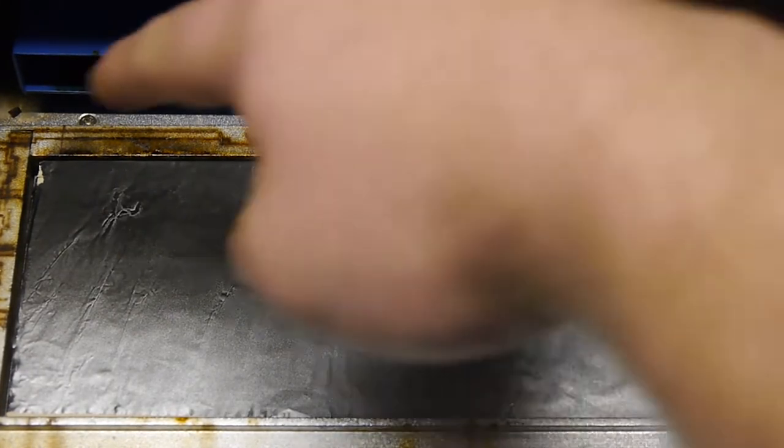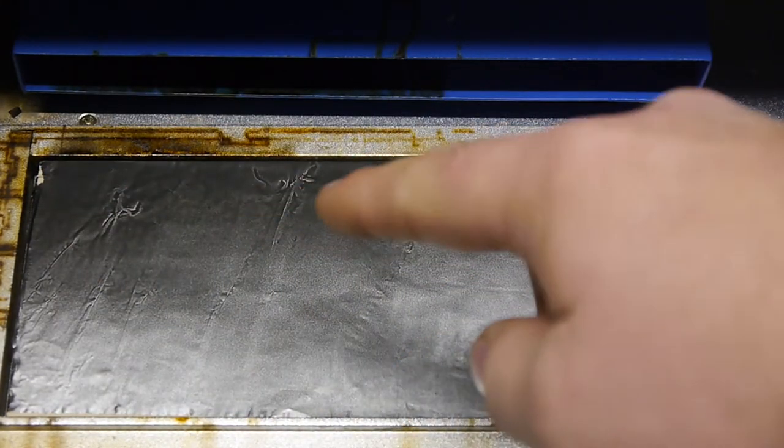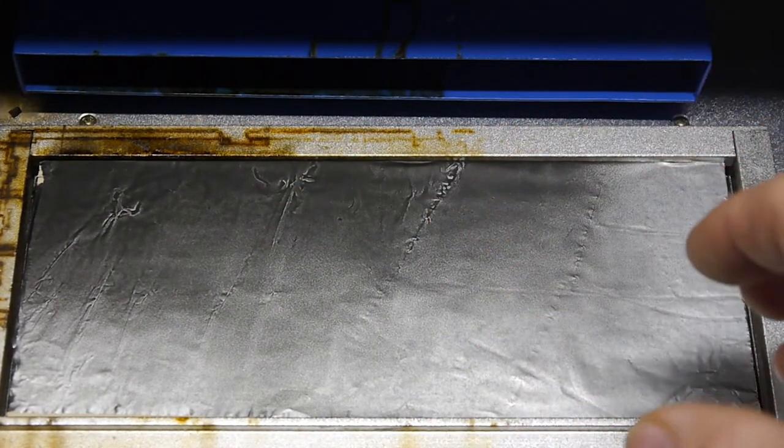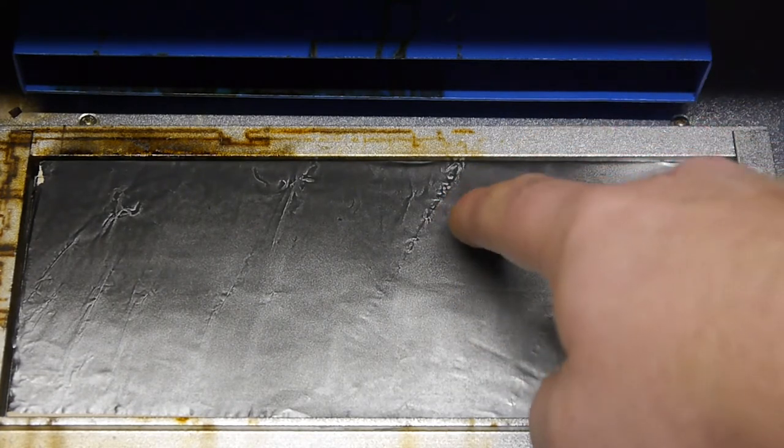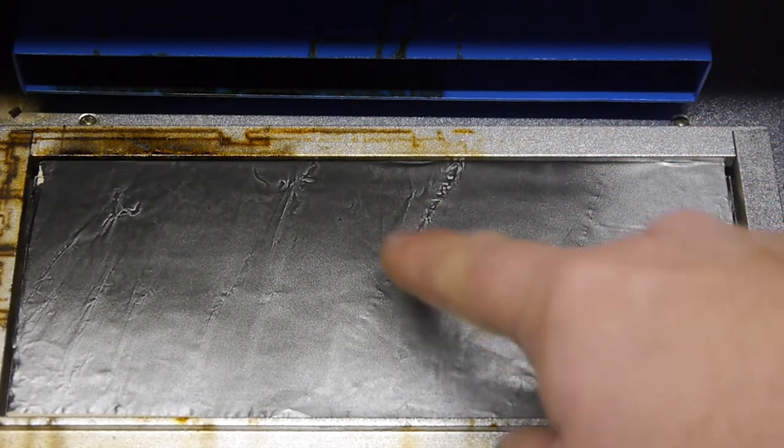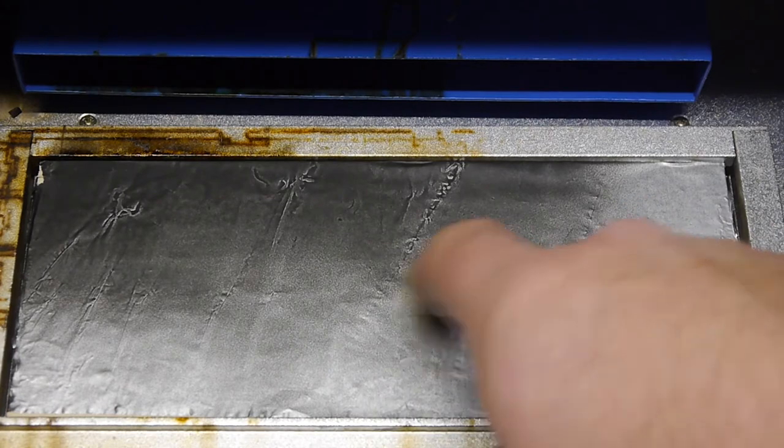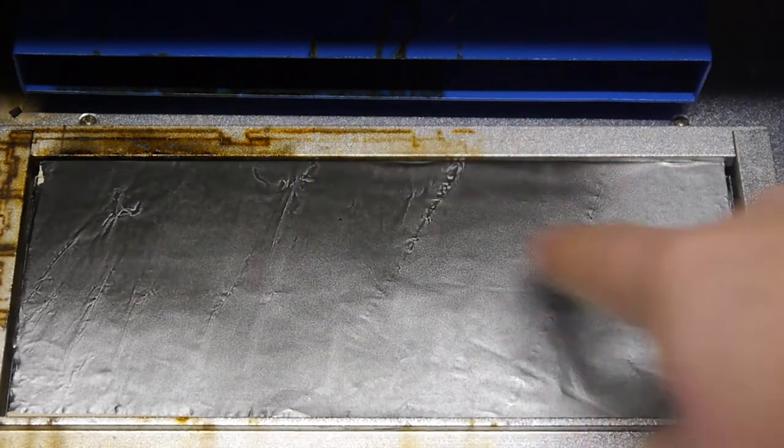And then spray paint part of it black and part of it regular, just to make sure. I'm wondering how much paint is too much - do you need a little bit, a lot? So we'll see if this cuts at all. I think it'll cut over here but not over here.